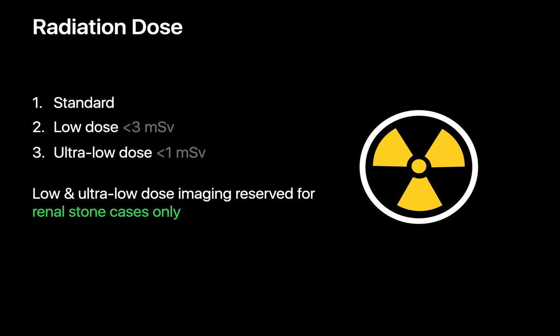Sometimes there may be no need to image the pelvis at all, and a scan may start just above the domes of the diaphragm or mid-liver and stop at the anterior superior iliac spines. Radiation doses used for abdominal CT imaging may be standard, low, or ultra-low.